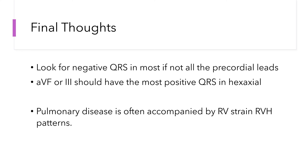Final thoughts: look for the negative QRS in most, if not all, the precordial leads. V1 and V6 are your anchor leads — you should be looking at them first. V1 should be negative with both its QRS and T wave. V6 should be upright with its QRS and T wave. If you don't have that, you have an abnormality. If you see an S wave that persists throughout the precordium, that is abnormal, and pulmonary disease patterns will present that way — often with an axis closer to 90 or 120 degrees, meaning AVF or lead III would be the most positive. This is especially true when accompanied by RV strain or RVH, where the right ventricle starts increasing its electrical production and competing with the left ventricle for dominance.